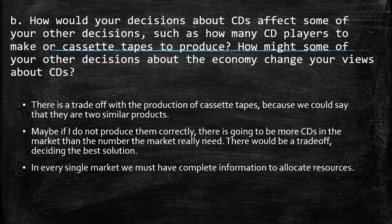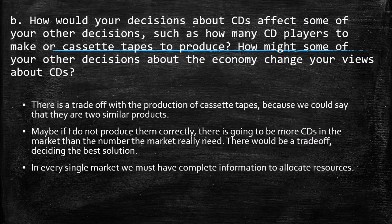The second point is: how would your decisions about CDs affect some of your other decisions, such as how many CD players to make or cassette tapes to produce? According to the suppliers and artists who are going to produce and create music, I need to provide the resources of CDs. I have to know how many CDs I have to produce that are going to be recorded — so in this side, the artists are going to be the demand part and I as central planner want to be the supplier of the CDs they will record.